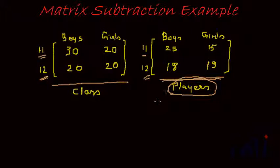Now if somebody wants to find out the number of boys and girls in the class who do not play any game in class 11 and 12, how do we find out? Obviously, we just need to take the total number of boys in class 11 and subtract the total number of boys in class 11 who are also players. If we do that, we will get the number of boys in class 11 who do not play any game. That's straight, right?